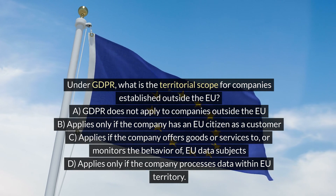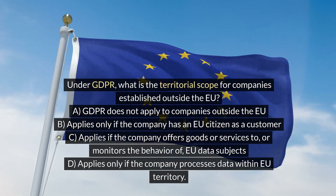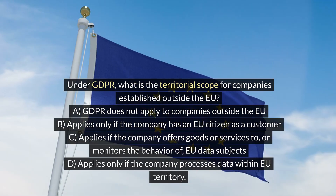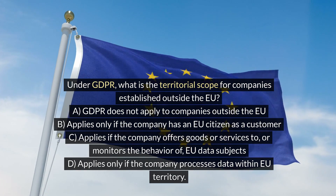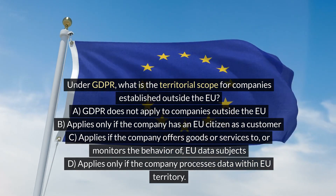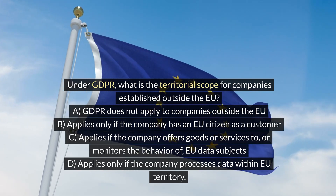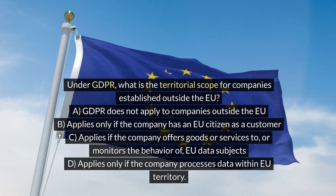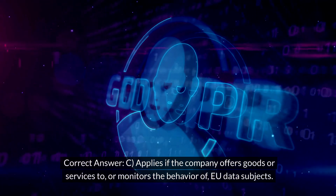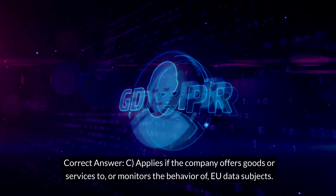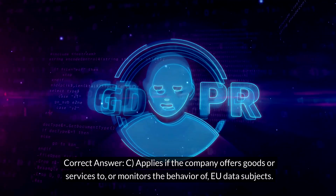Under GDPR, what is the territorial scope for companies established outside the EU? A. GDPR does not apply to companies outside the EU. B. Applies only if the company has an EU citizen as a customer. C. Applies if the company offers goods or services to, or monitors the behavior of, EU data subjects. D. Applies only if the company processes data within EU territory. Correct answer: C. Applies if the company offers goods or services to, or monitors the behavior of, EU data subjects.